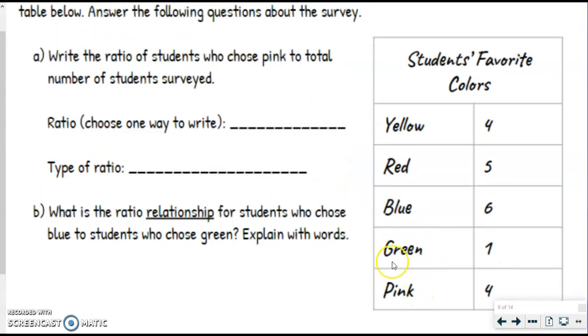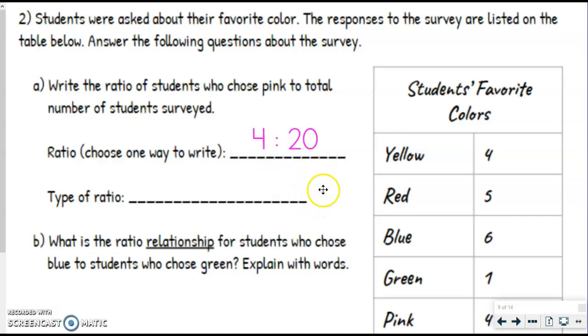But anyhow, we are doing pink, which was four, to total, which is 20. So we want four to 20, write it in the colon fraction, the word two, whatever you prefer.